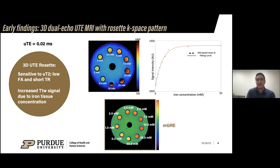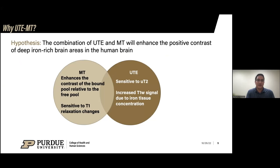Our idea was to combine the benefits of both approaches: the ultrashort echo time, which is very sensitive to ultrashort T2 and shows increased signal with increased iron concentration, and the magnetization transfer, which enhances the contrast of the bound pool relative to the free pool and is also sensitive to T1 changes. We hypothesize that combining those two effects will enhance the contrast of the deep iron-enriched areas in the brain even more.